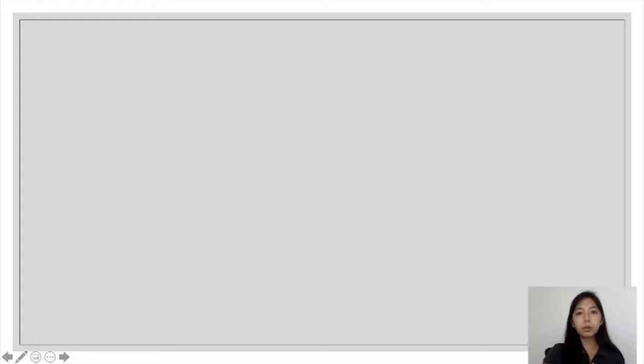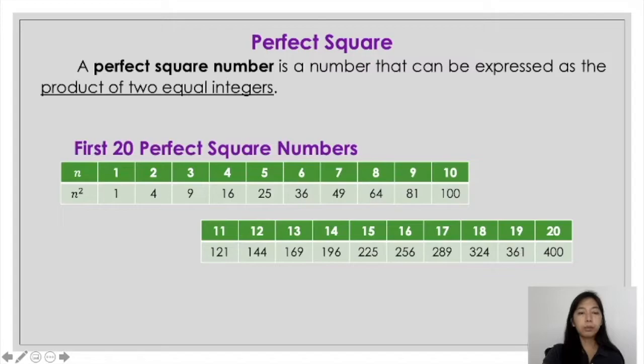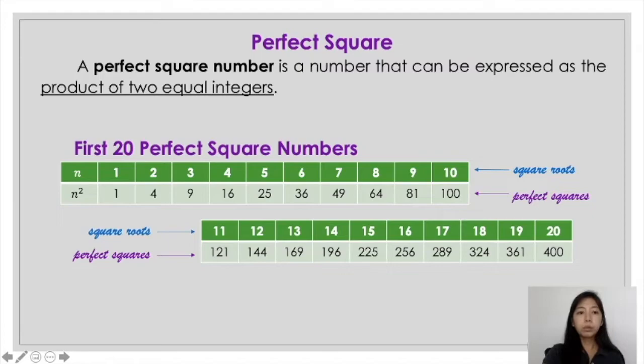But before doing that, you have to consider or recall what perfect square numbers are. Here are the first 20 examples of perfect square numbers. The numbers at the bottom are considered as perfect squares, whereas the numbers on top are considered as square roots. These two are important when you are factoring the difference of two squares. But how do we know when numbers are considered as perfect squares?